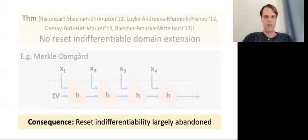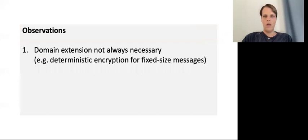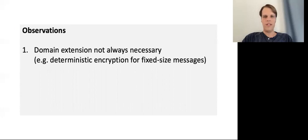This strong impossibility seems to have basically led to reset indifferentiability being abandoned, and there have been few subsequent works in the area. The starting point for this work is two observations. First, we observe that domain extension is not always necessary. For example, sometimes we use random oracles for deriving the coins for a public encryption scheme — such as building CCA-secure encryption using the Fujisaki-Okamoto transform, or building deterministic encryption from general public key encryption. The deterministic encryption example is more relevant since it's a multi-stage game and therefore needs reset indifferentiability. If our messages are a fixed size, we don't necessarily care about domain extension as long as the building block has a sufficiently large domain.